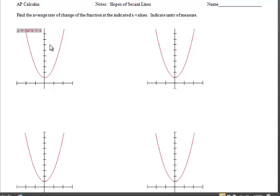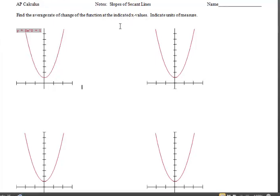Welcome to the second part of our notes, Slopes of Secant Lines. Find the average rate of change of the function at the indicated x values. And as you can see, there are no x values that are indicated. We will do that together. What might concern you is this statement, indicate units of measure.